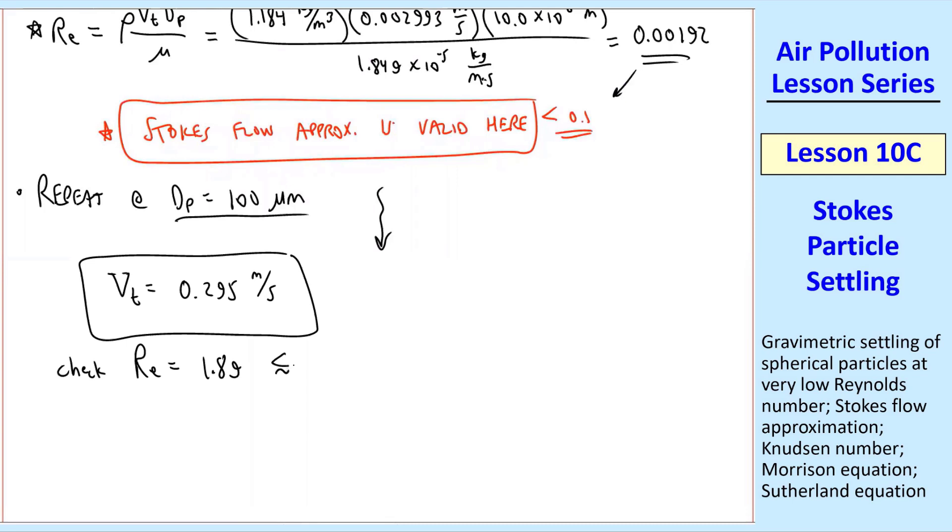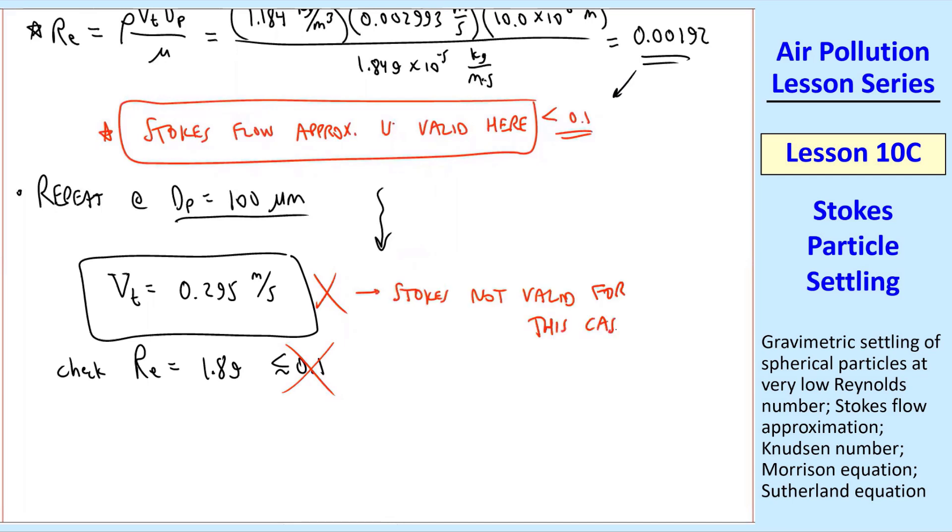So we check, is that less than about 0.1? No, it's not even close. So this is not a correct answer. I would say that Stokes is not valid for this case. So that number is kind of bogus. That answer is bogus. I don't trust it.